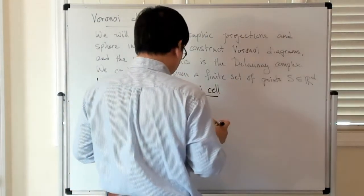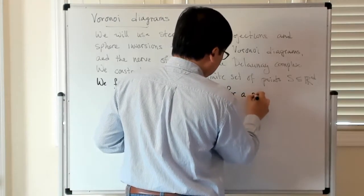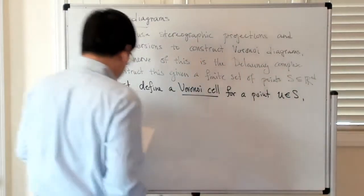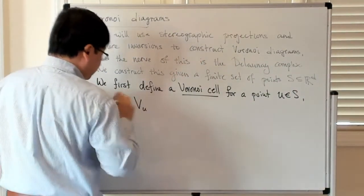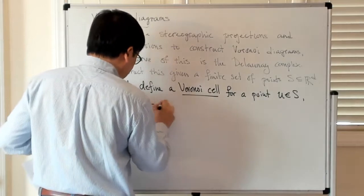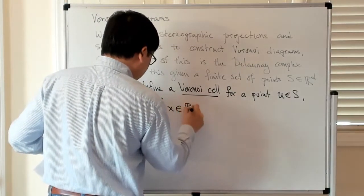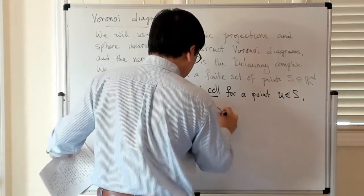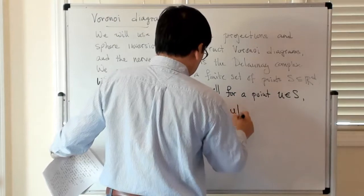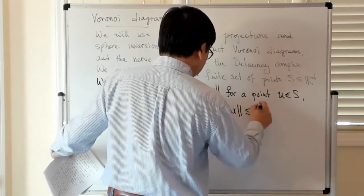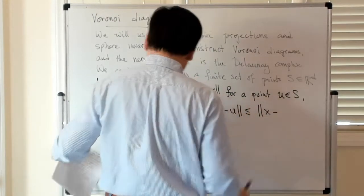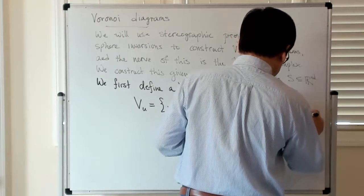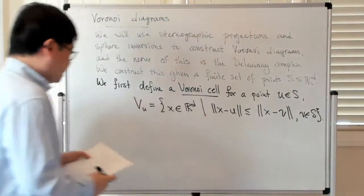We define a Voronoi cell for a point, let's say u, which is contained in S. The Voronoi cell V(u) associated with that point is the set of x's in R^d with the property that the distance from x to the point u is less than or equal to the distance from x to the point v, where v is in the set S.